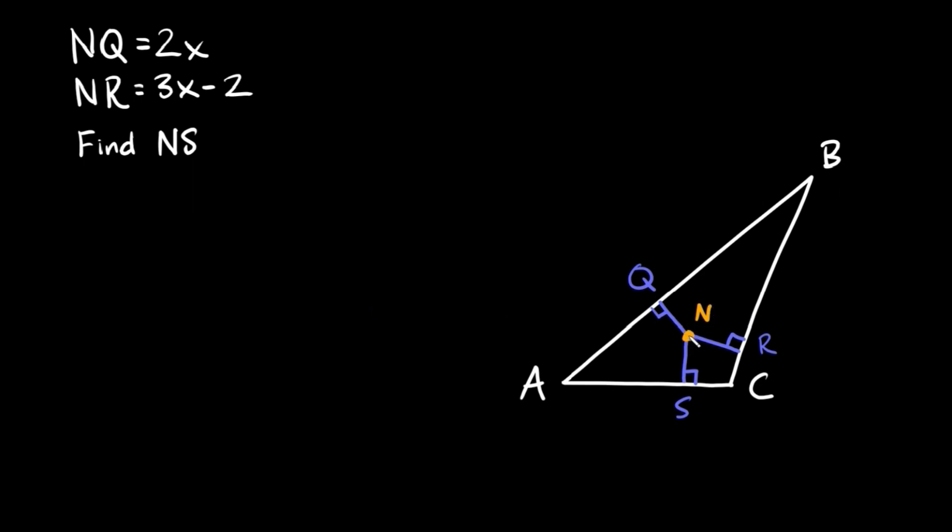Now the in-center of a triangle is just a point that's always inside of a triangle and it's the same distance away from all three sides of the triangle. The distance from the in-center to the side creates a 90 degree angle with each of the sides.